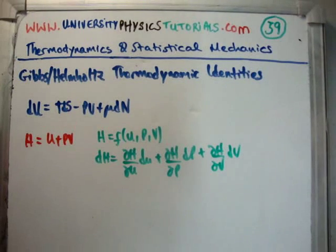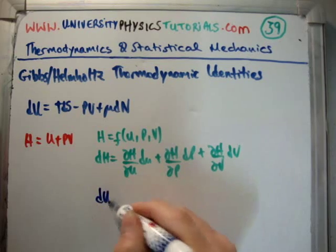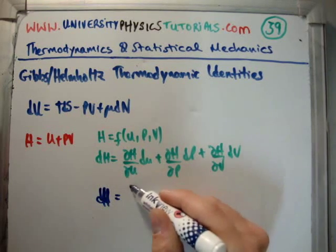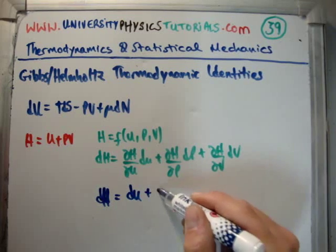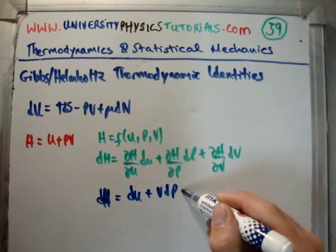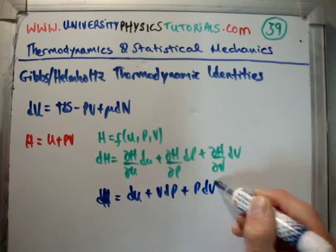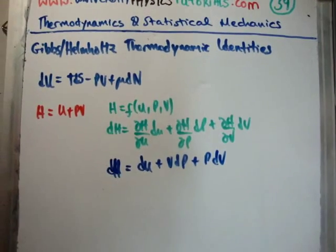In general, that is just a mathematical property of all these derivatives. Okay, so that means dH is equal to dU plus VdP plus PdV. Okay, if you just plug in the derivatives.